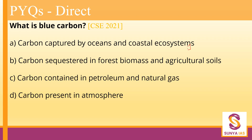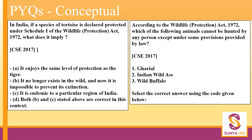Another example question is on blue carbon. If you read the chapter on mitigation strategies or carbon sequestration, you will come across this. The answer is option A — carbon captured by ocean and coastal ecosystems. These are the kinds of direct concepts we are going to get right in this course.